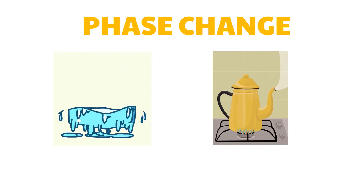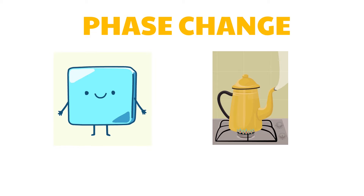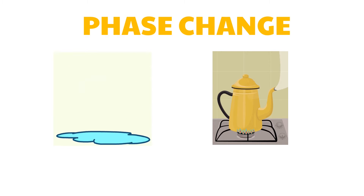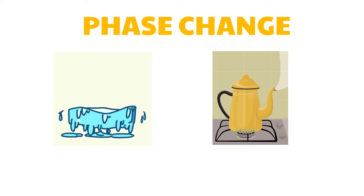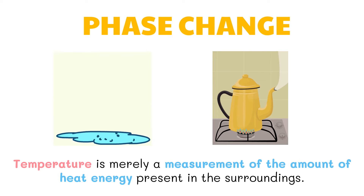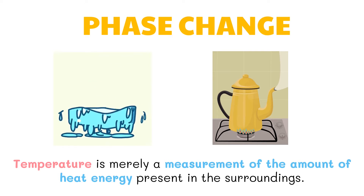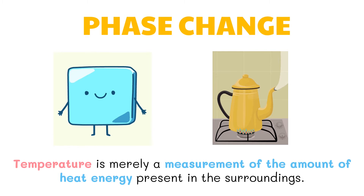If pressure is constant, the state of a substance will depend entirely on the temperature it is exposed to. For this reason, ice melts if taken out of a freezer, and water boils out of a pot if left at too high a temperature for too long. Temperature is merely a measurement of the amount of heat energy present in the surroundings. When a substance is placed in surroundings of a different temperature, heat is exchanged between the substance and the surroundings, causing both to achieve an equilibrium temperature.